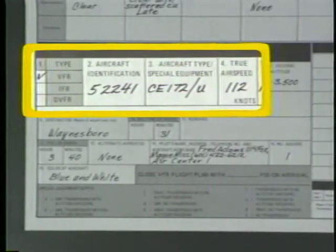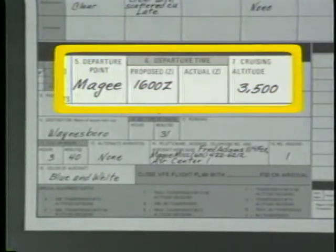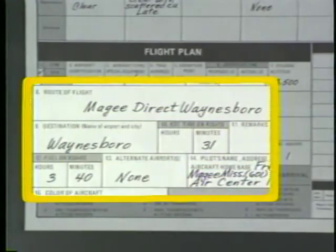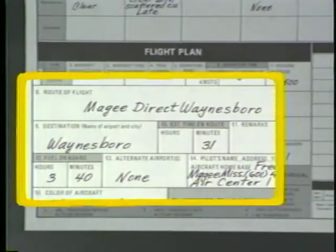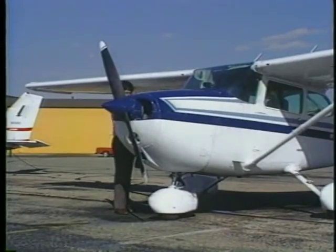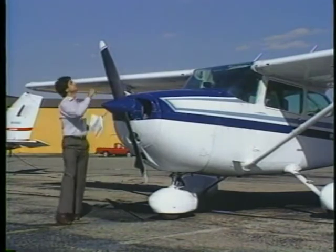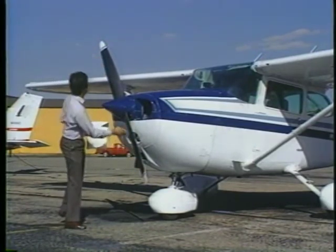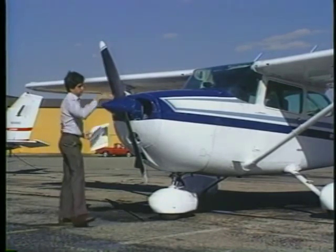Go ahead. The aircraft is 52241, a Cessna 172 slash uniform. True airspeed 112 knots. Departure point is McGee. Proposed departure time 1600 Zulu. Altitude 3,500. Route is McGee direct Waynesboro. Destination Waynesboro. ETE 31 minutes. Fuel on board 3 hours 40 minutes. Pilot's name is Fred Adams, 1114 Fox. If you anticipate a delay in your departure in excess of one hour, let the flight service station know — otherwise, the flight plan is considered void after an hour and you must refile.